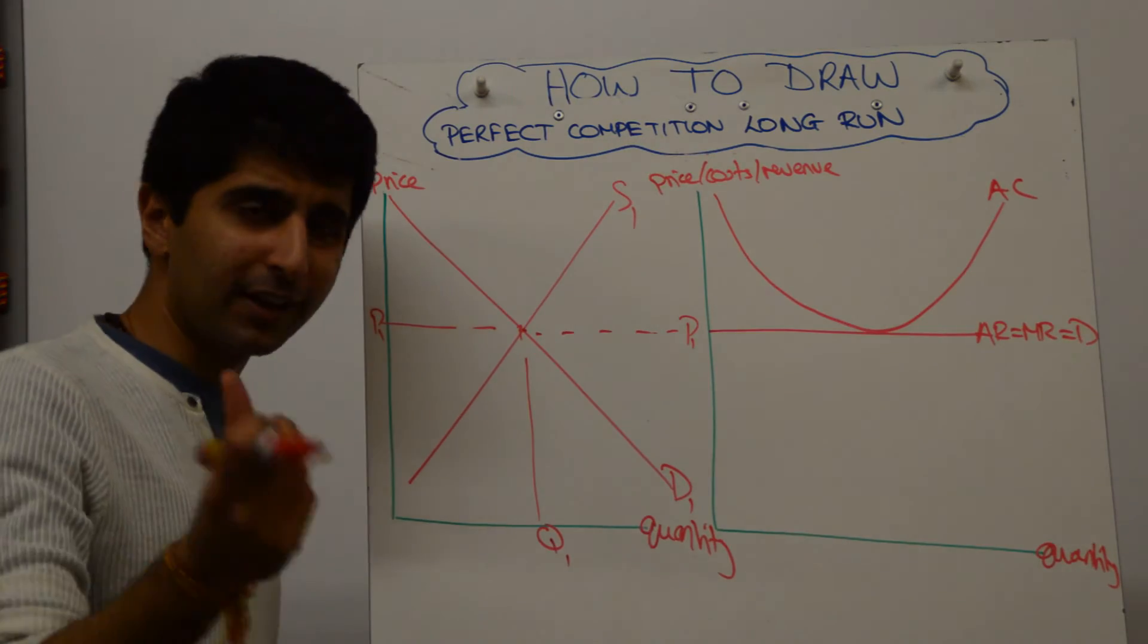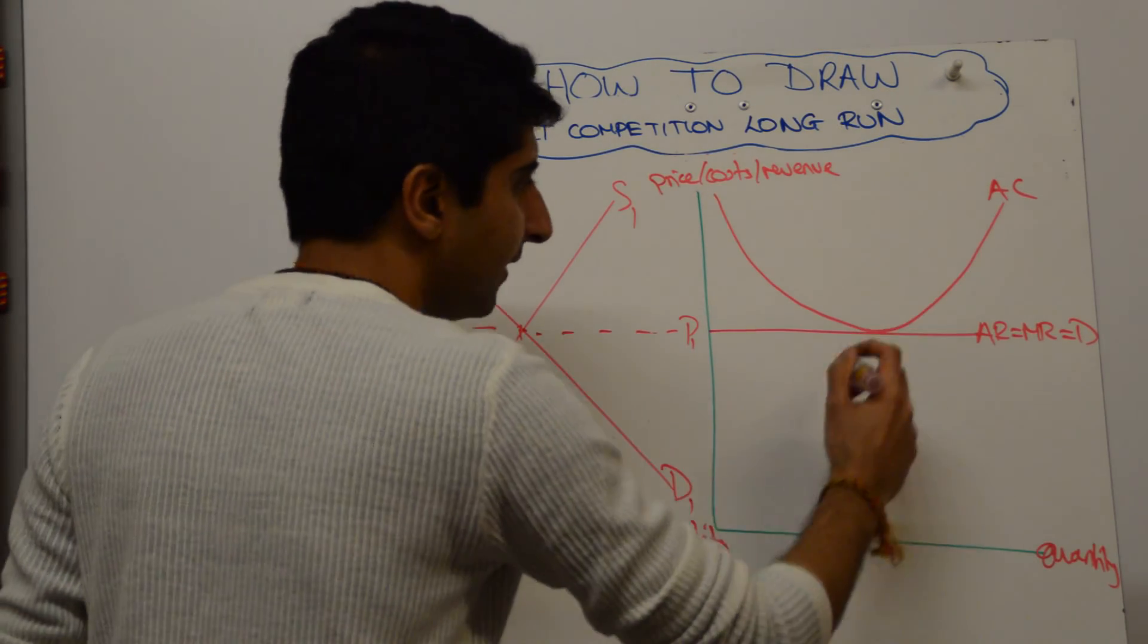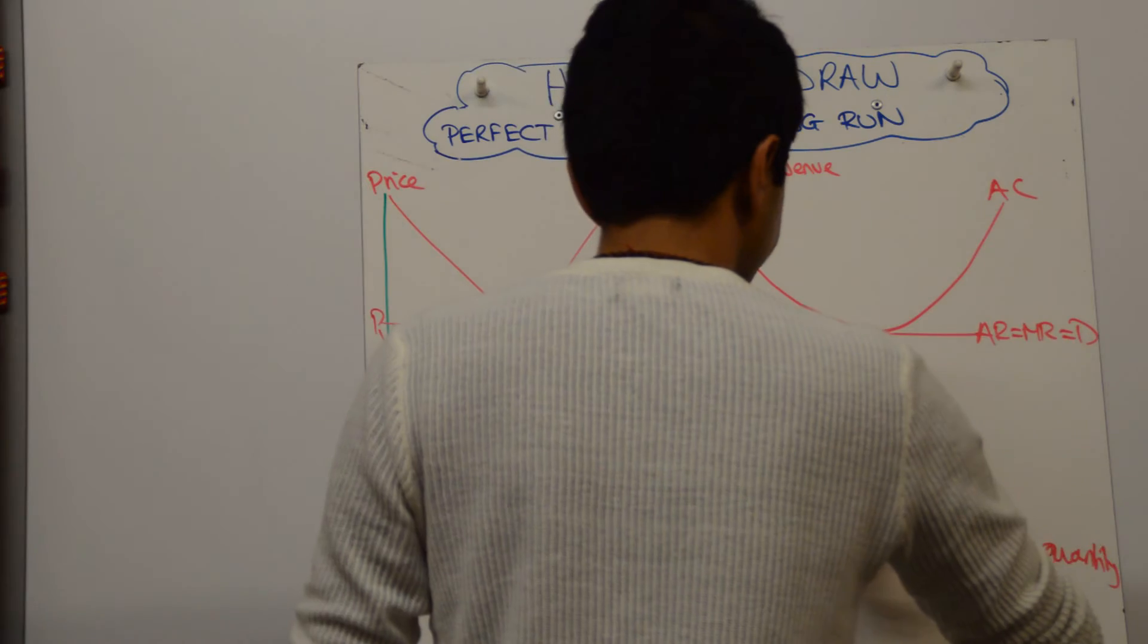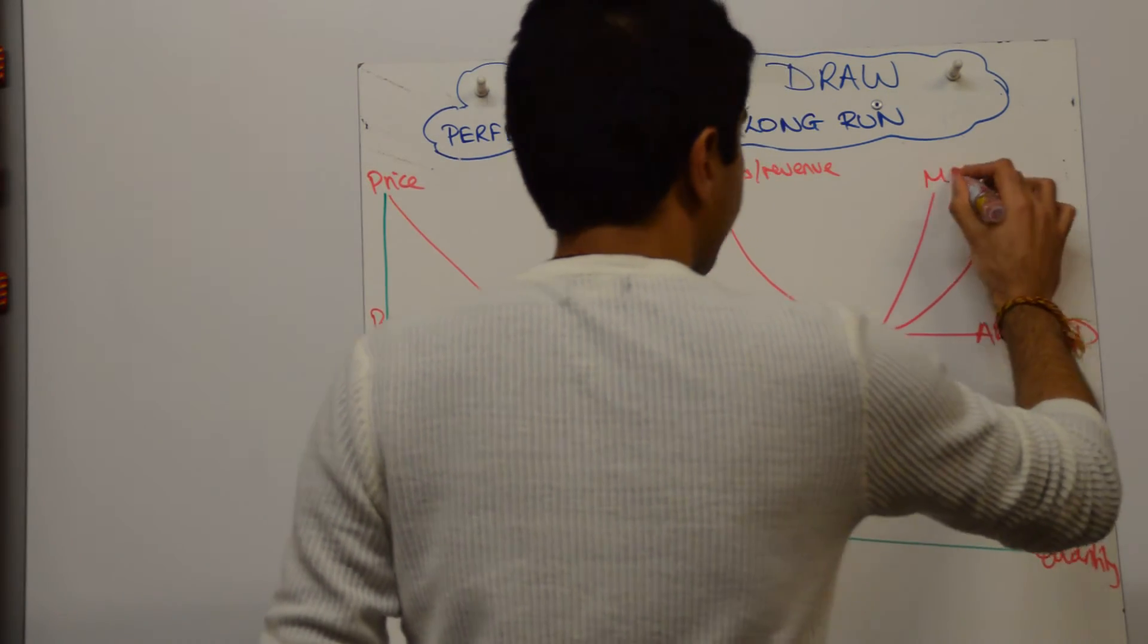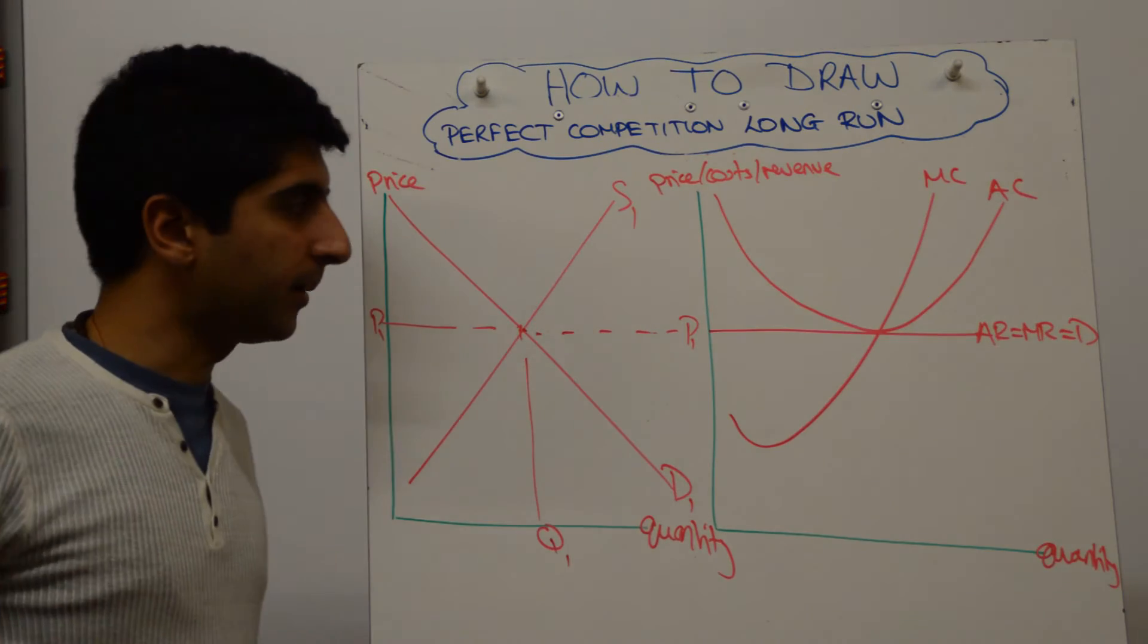Right, so just touching the curve down there, tangential at that given point. Perfect. And then MC to cut AC at its lowest point as well. Like that, it's absolutely fine. Right, so just practice doing that, but follow the stages that I'm doing it in.